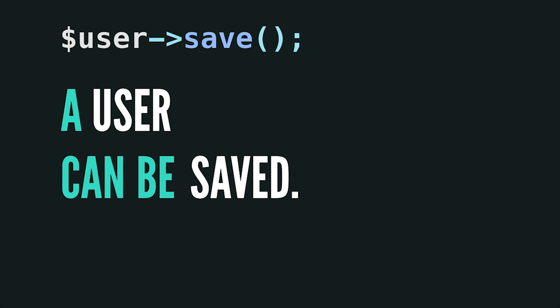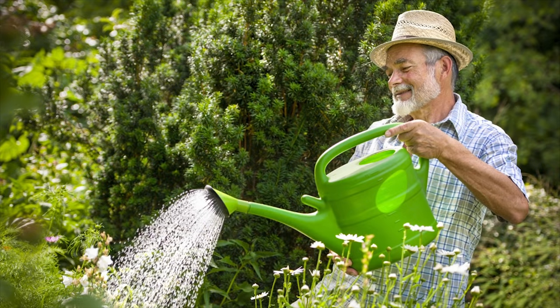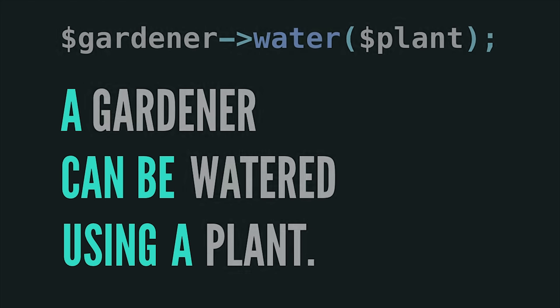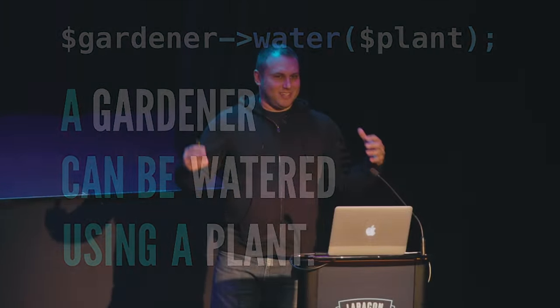Let's take a look at our gardener example again. Using this sentence structure, having gardener.water(plant), we end up with: 'a gardener can be watered using a plant.' Maybe this makes sense if you're building a game like Revenge of the Plants where the plants have to get back at the evil gardener, but for what we're working on, I don't think this is the right way to model this. A gardener can be watered using a plant — this isn't right.